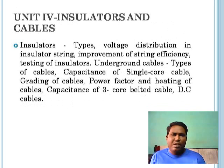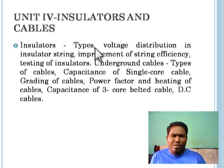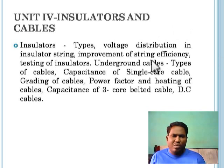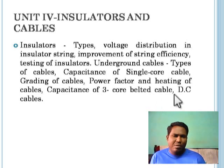Unit four covers insulators and cables. We will discuss insulator types, voltage distribution in insulator strings, methods to improve string efficiency, and methods to test insulators. Next is underground cables: types of cables, capacitance of single-core cable, grading of cables, power factor, heating of cables, capacitance of three-core belted cable, and DC cables.